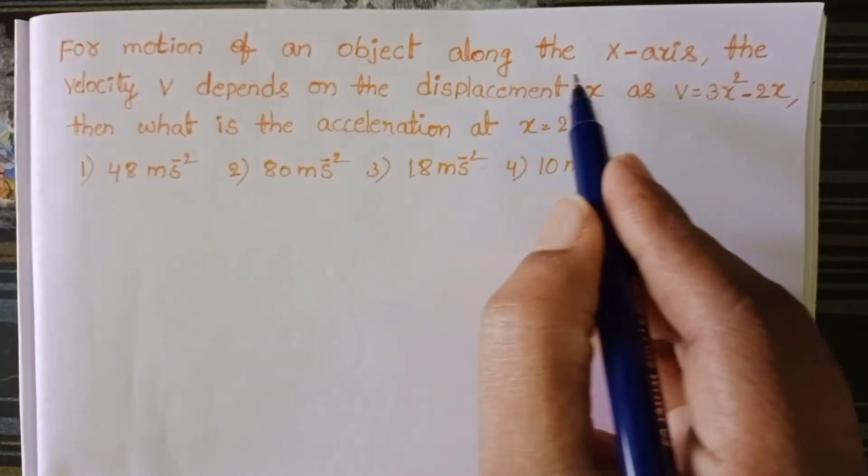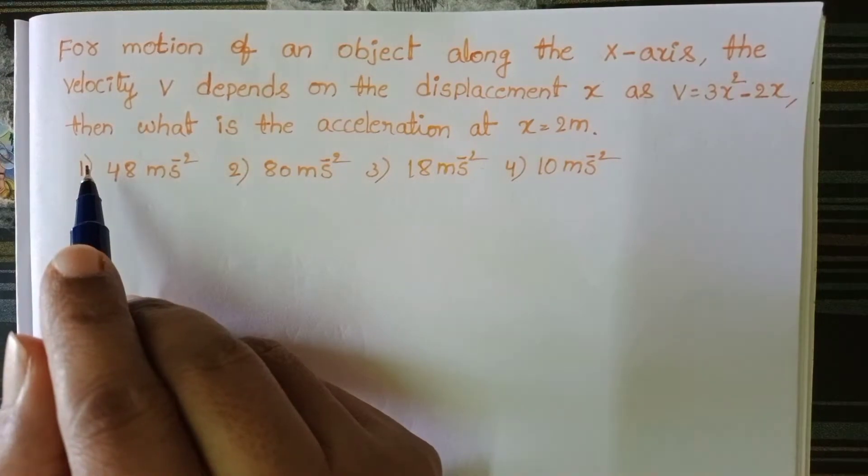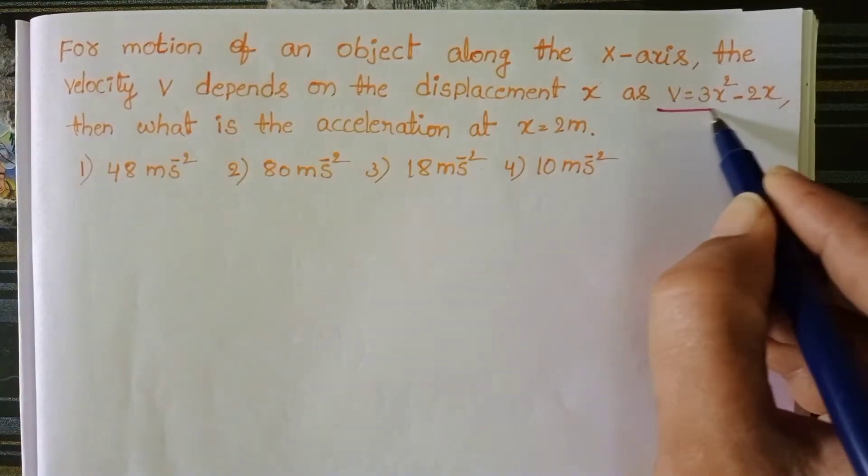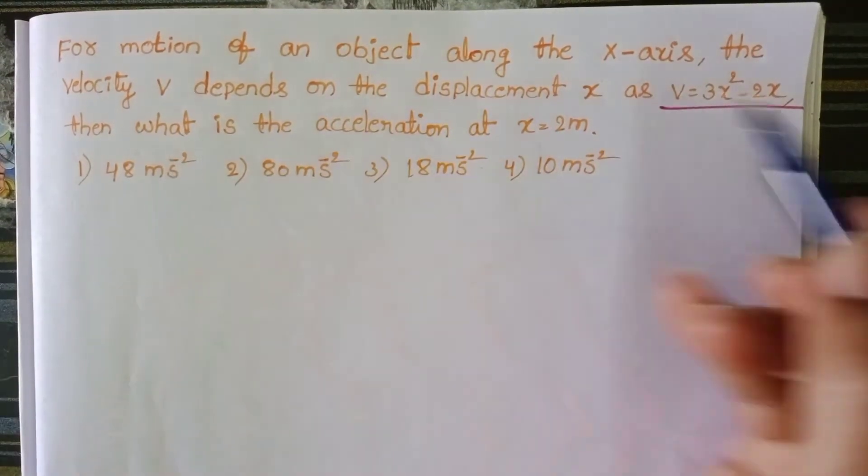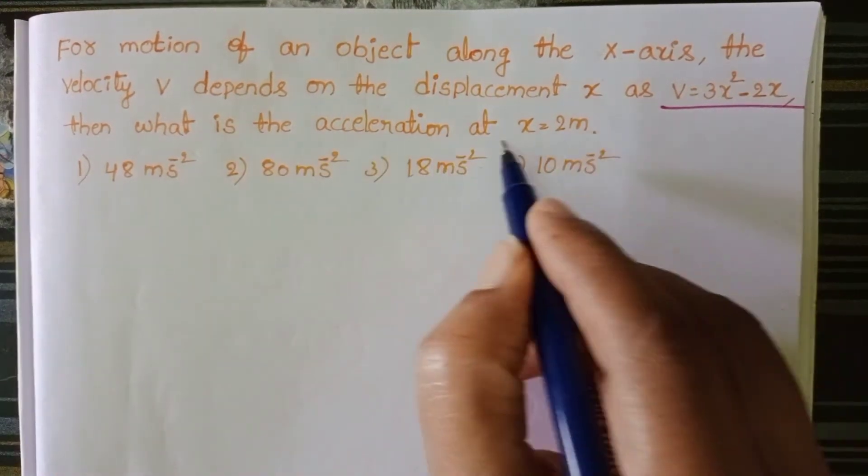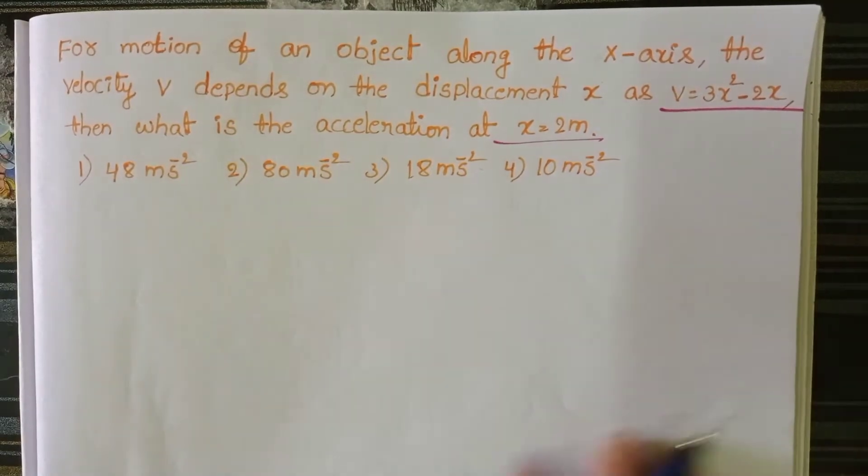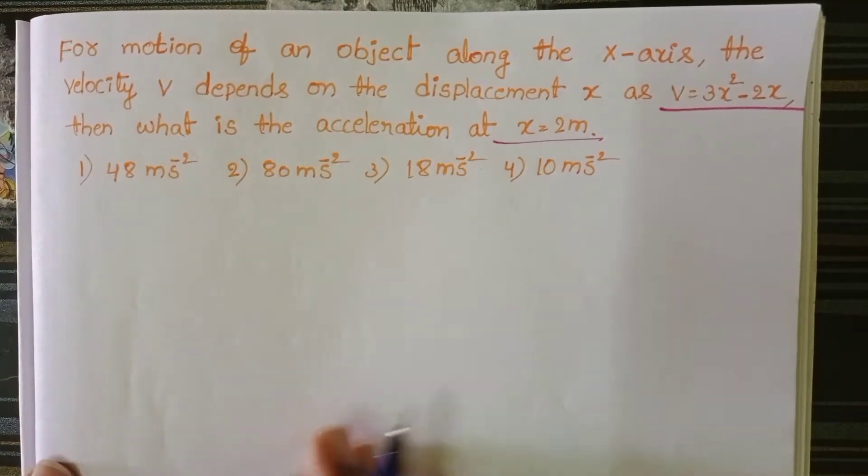For motion of an object along the x-axis, the velocity v depends on the displacement. This is given velocity as a function of x. Then what is the acceleration at x equals 2 meters? In this question, we have to find out acceleration.